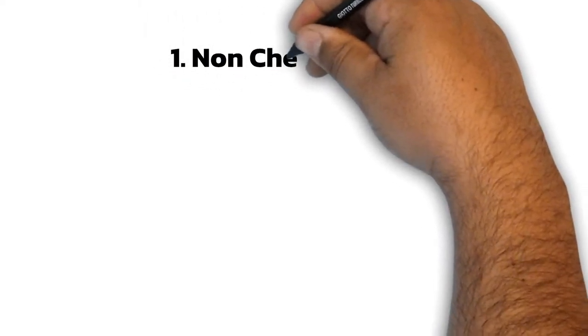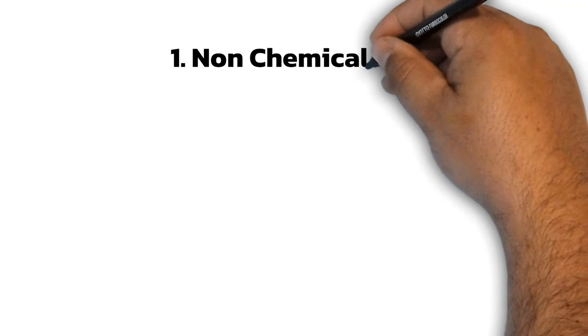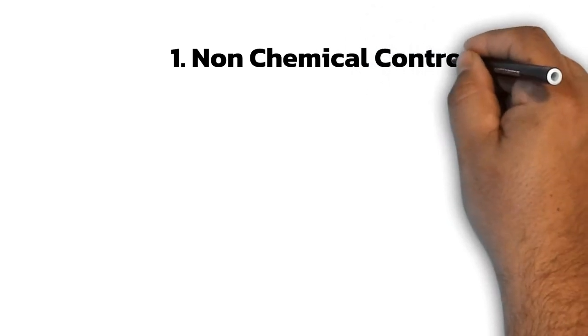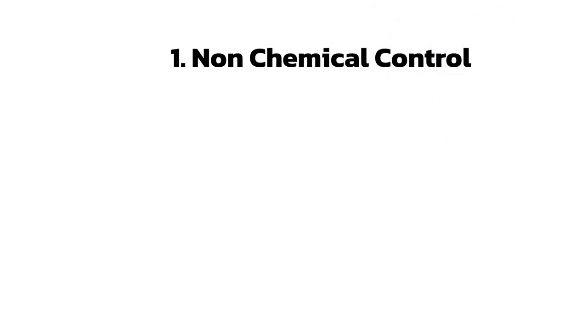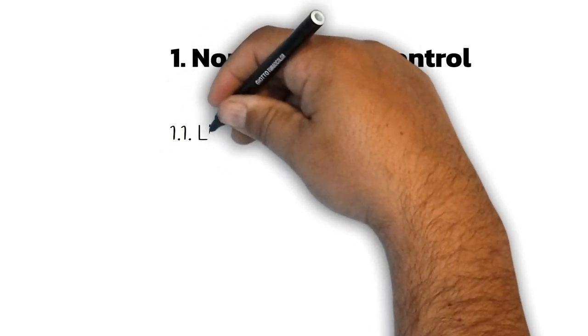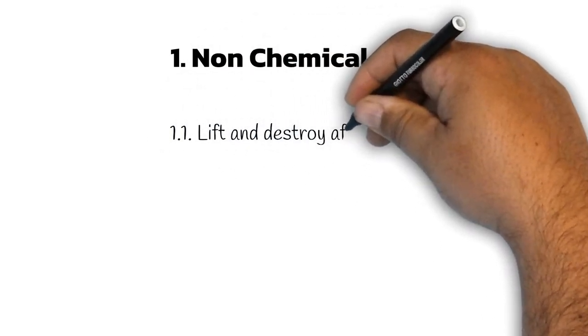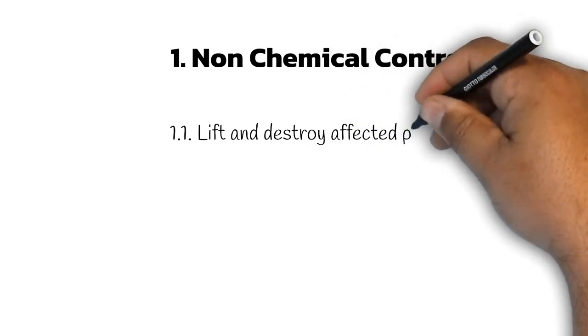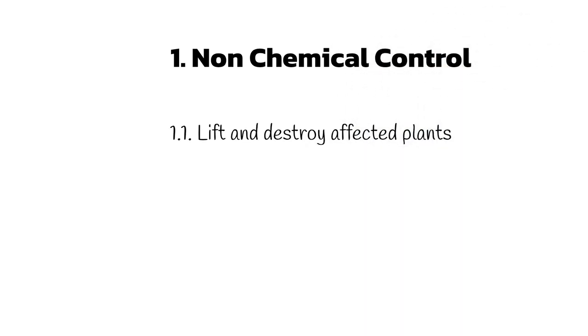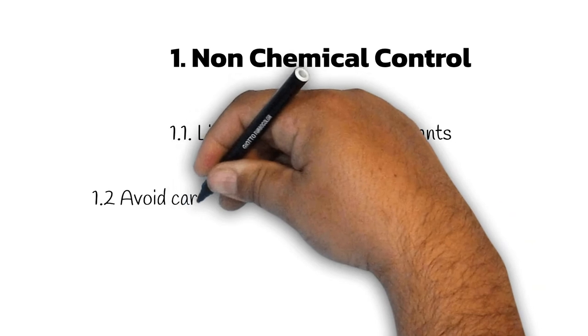First, non-chemical control. If crown gall is detected, lift and destroy affected plants, grow crops of potatoes or other vegetables over the next one or two years to help eliminate the bacteria from the soil. Avoid all unnecessary root, crown and trunk wounding by careless cultivation and other machinery operations. And control soil insects.